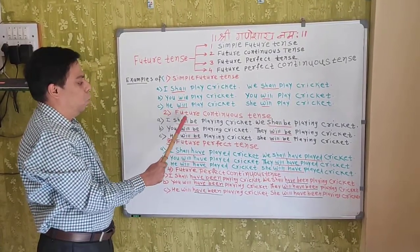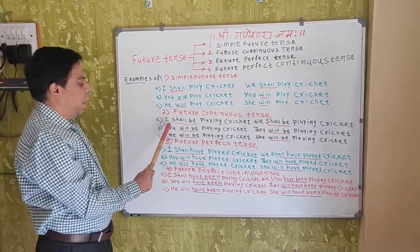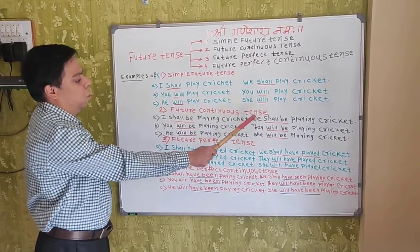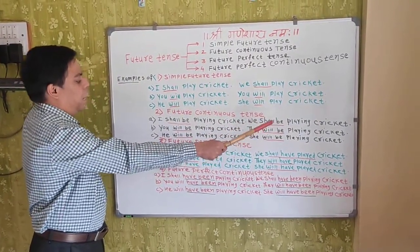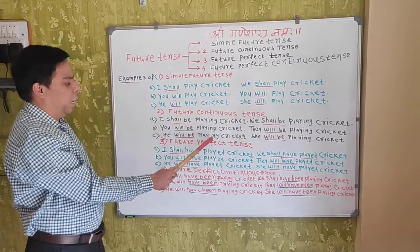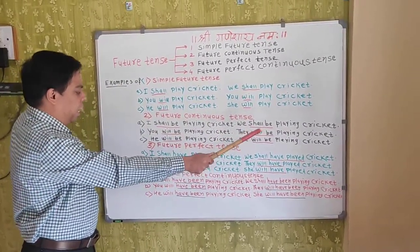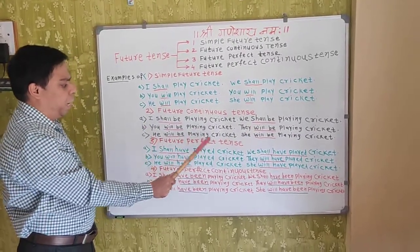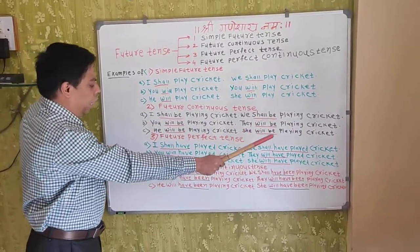Second, future continuous tense. I shall be playing cricket. We shall be playing cricket. You will be playing cricket. They will be playing cricket. He will be playing cricket. She will be playing cricket.